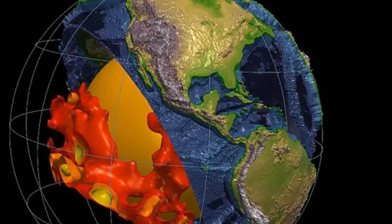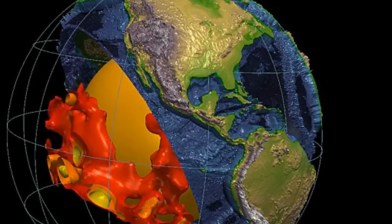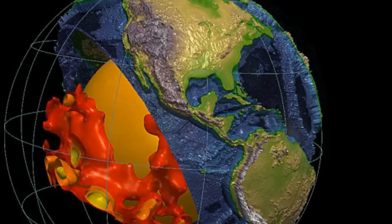These blobs are placed on opposite sides of the planet, with one below the Pacific Ocean, and one beneath the Atlantic.